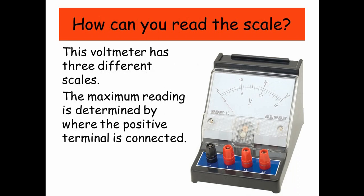How can you read the scale? This voltmeter has three different scales: 30, a maximum of 3 volts, and at the bottom a maximum of 15 volts. The maximum reading is determined by where the positive terminal is connected.